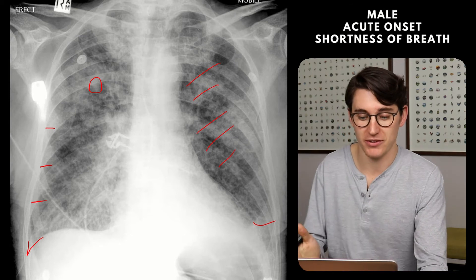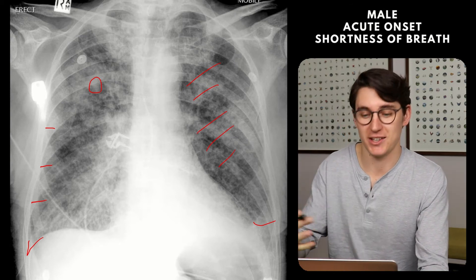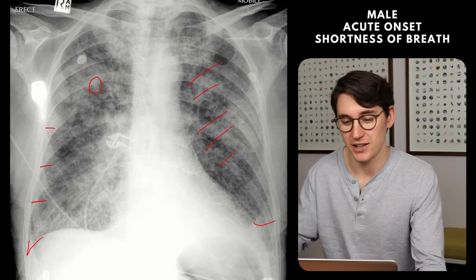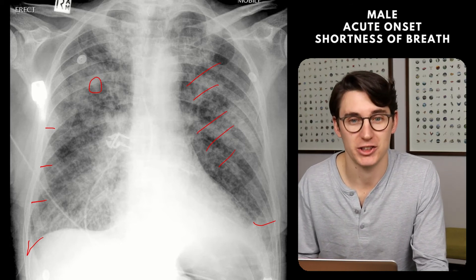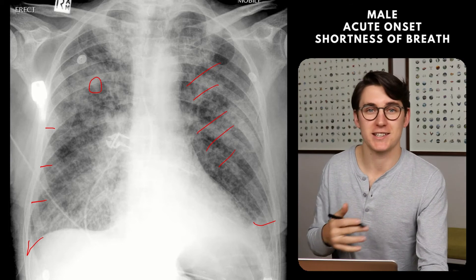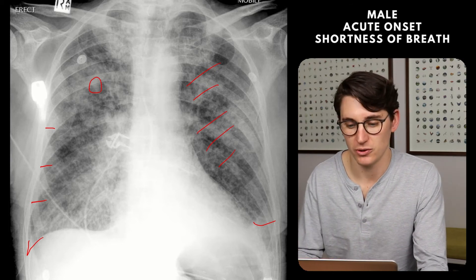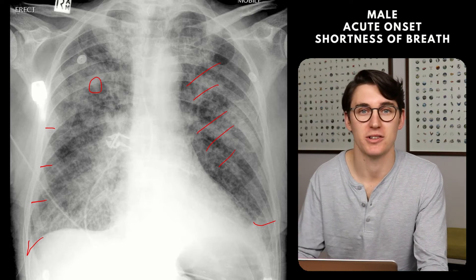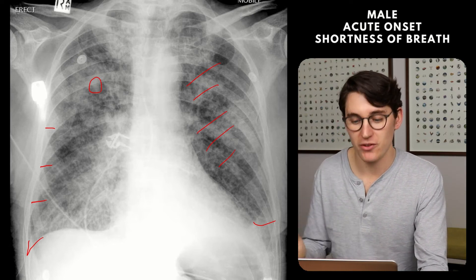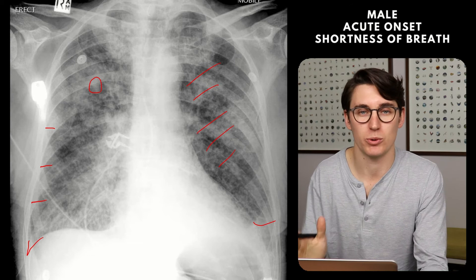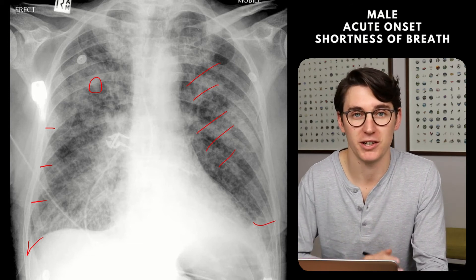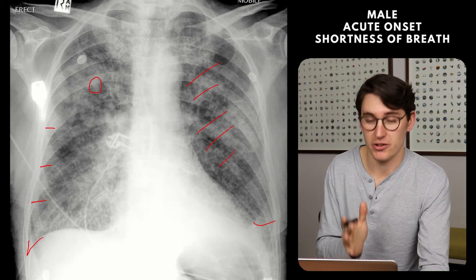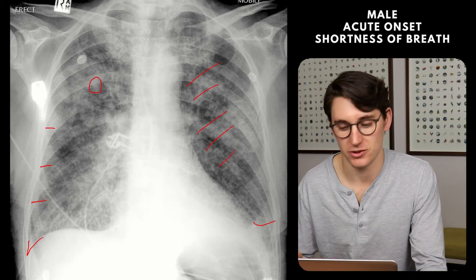I would leave it there and allow the examiner to ask questions — if I've missed anything, they can push me in the right direction. For me, this case comes down to having an approach to bilateral opacification in the chest. Generally, you're trying to distinguish between acute pulmonary edema, infection, or ARDS, and you can look for radiographic features to help distinguish those.